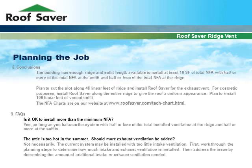The building has enough ridge and soffit length to install at least 10 square feet of total net free area, with half or more of the total NFA at the soffit and half or less at the ridge. Plan to cut the slot along 48 linear feet of ridge and install Roof Saver for the exhaust vent. For cosmetic purposes, install Roof Saver along the entire ridge to give the roof a uniform appearance. Plan to install 100 linear feet of vented soffit. You can find the NFA charts on our website.